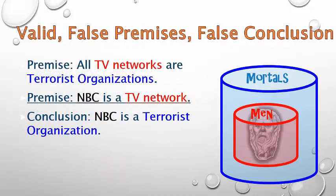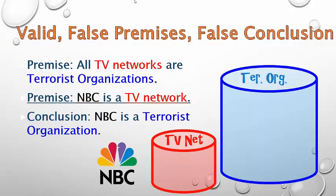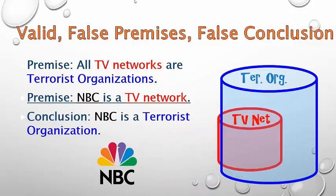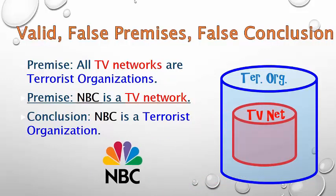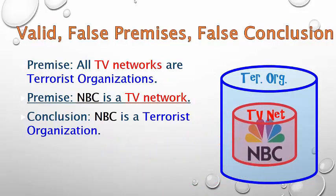You could have a valid argument in which you had false premises and a false conclusion, like this one: All television networks are terrorist organizations; NBC is a television network. Does it follow that NBC is a terrorist organization? Actually, yeah, it would — for all the same reasons as in the previous argument. If all television networks fall within the category of terrorist organizations, and NBC is a television network, that puts NBC squarely in that category. Again, valid argument — it doesn't matter whether the premises are true or false. It's a matter of the structure of this argument.